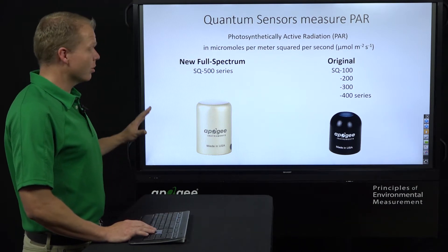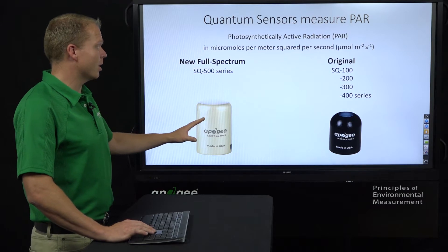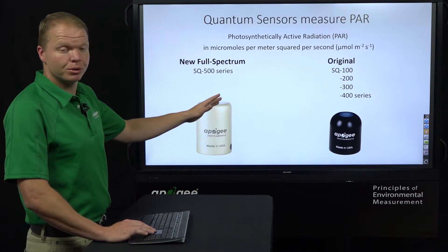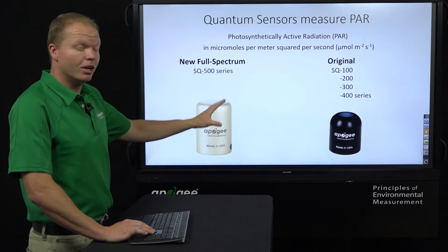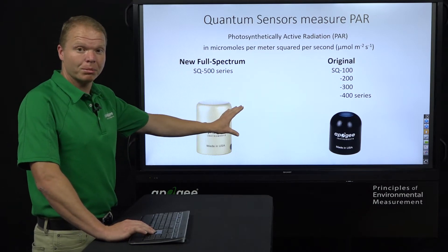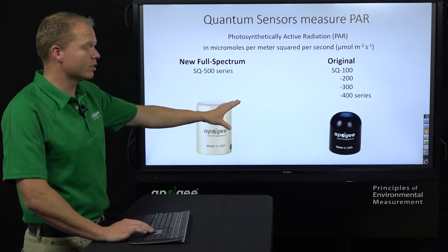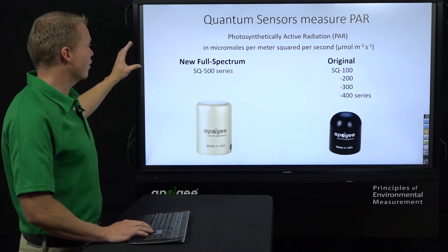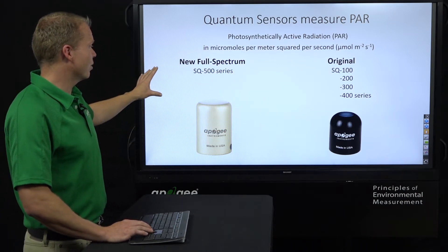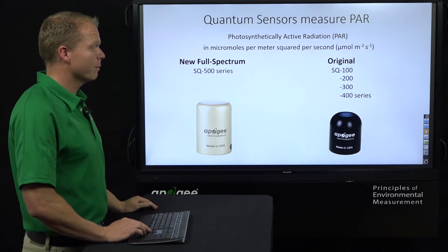These are the five different series we offer: the 100, 200, 300, and 400 series are all black with the black head and have our original spectral response, and then we have our full spectrum sensors over here that have the full spectral response.